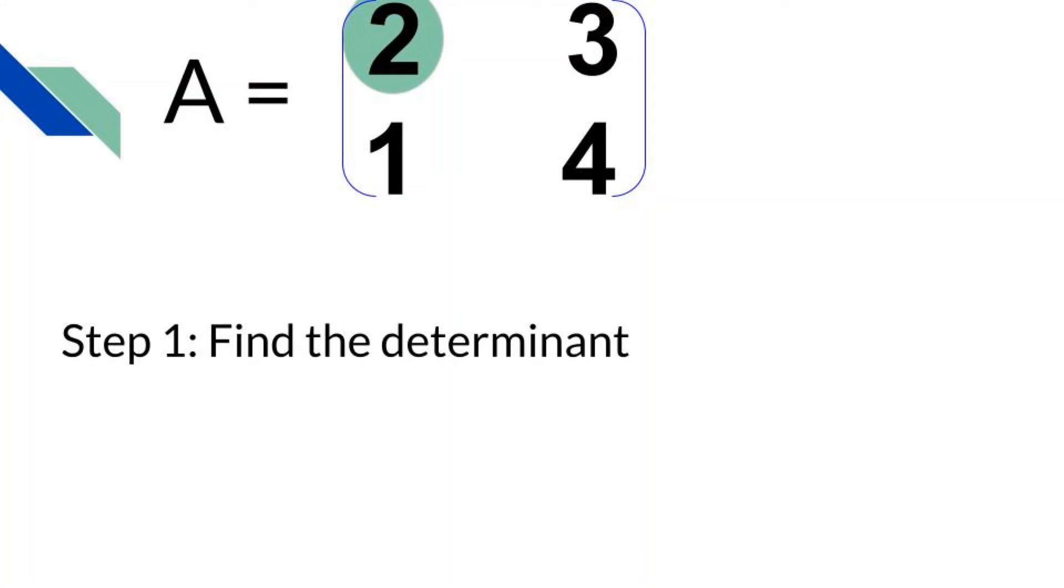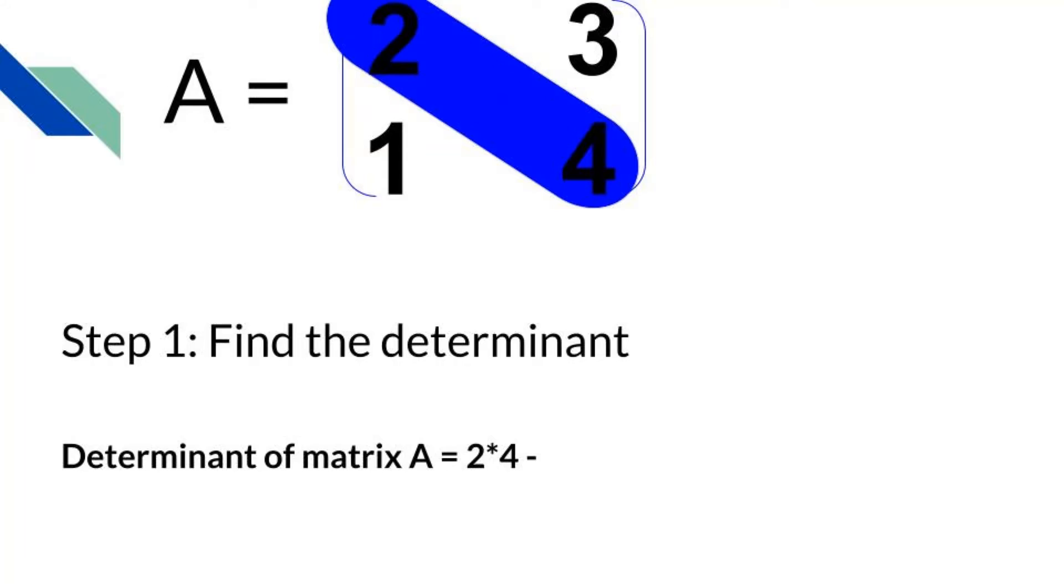We'll start off with our first value in the matrix. We will perform criss-cross applesauce. First make a diagonal with the first value and multiply them together. Now finish the criss-cross applesauce by subtracting the product of the other diagonal. We found it.